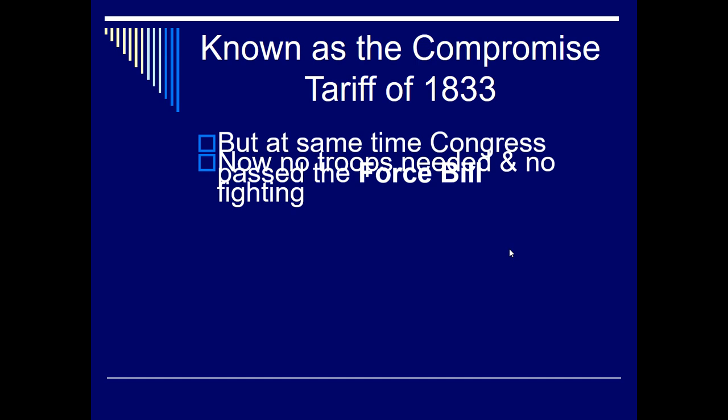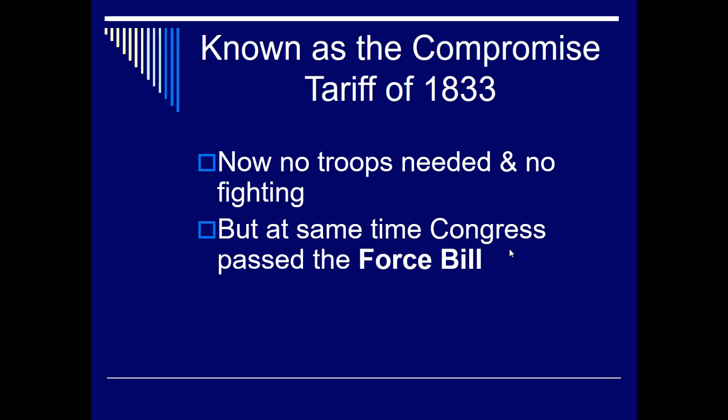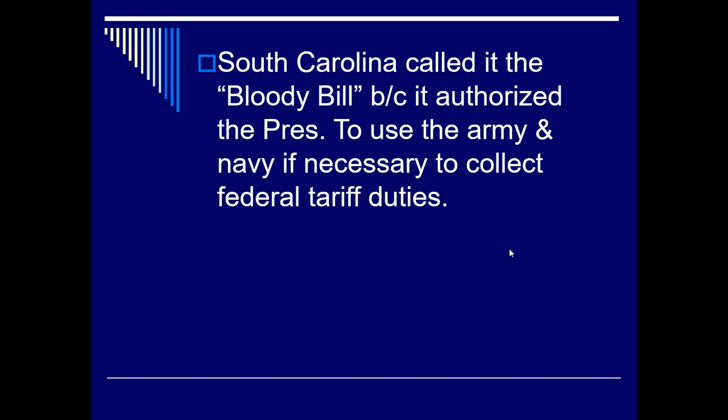No troops are now needed; no fighting is going to happen. At the same time as the compromise tariff, Congress passes something called the force bill. This should remind you of the Stamp Act protests — Britain repealed the Stamp Act but then immediately passed the Declaratory Act, which was just as bad. Similarly, the force bill negates the compromise tariff victory, because it allows the federal government to collect any duties they want using the army and navy if necessary. South Carolina calls it the 'bloody bill.'